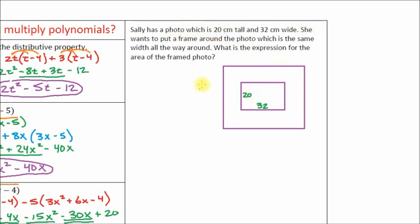She wants to put a frame around the photo — we did that — which is the same width all the way around. We don't know what that is, but we're going to have to assign it a variable. Let's just call that x. When they give you something in a word problem that you're supposed to figure out but they don't tell you the value, you assign it a variable. We don't need a variable for the width and height of the photo because we know those dimensions.